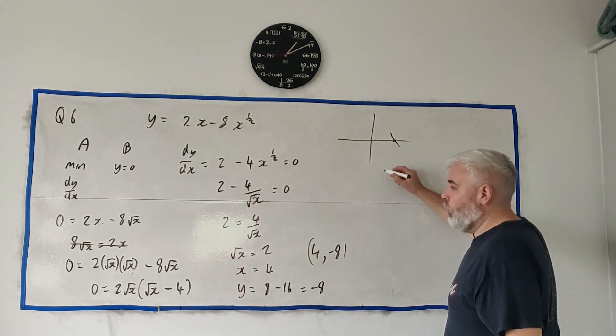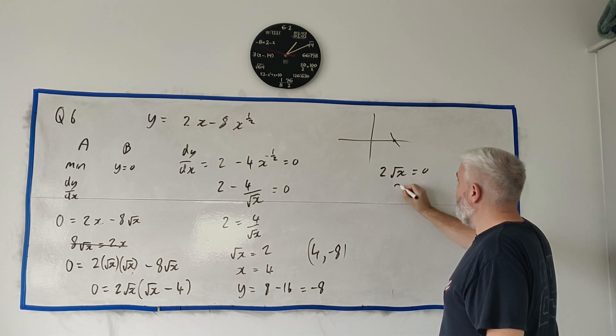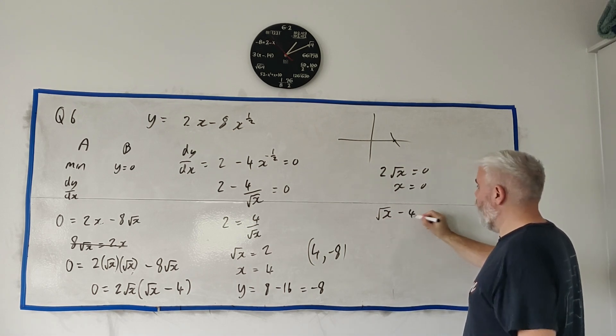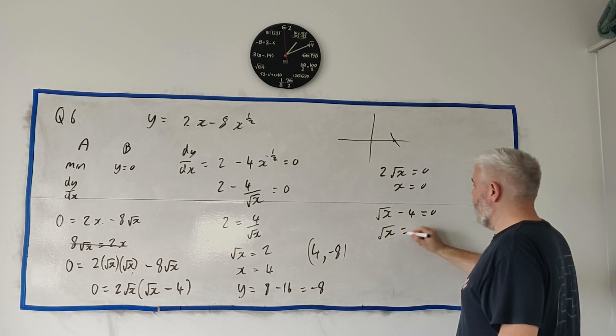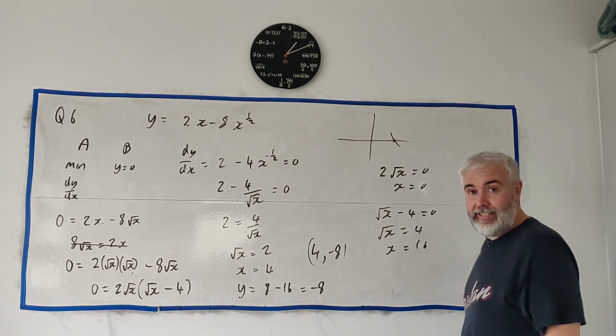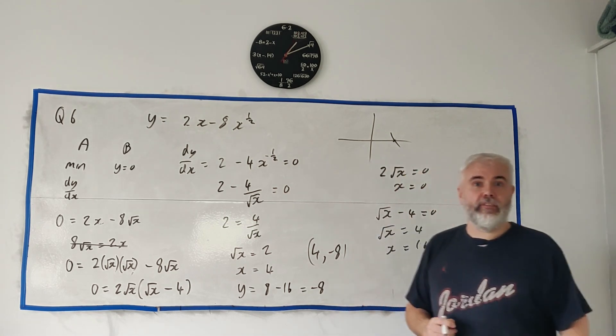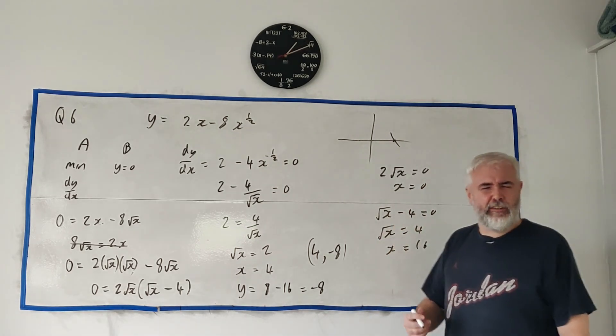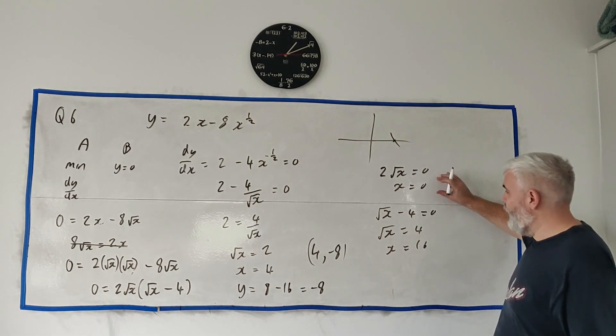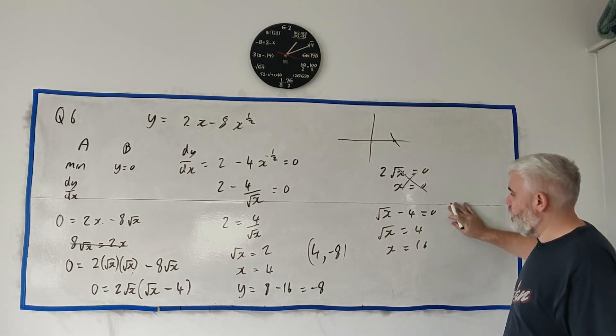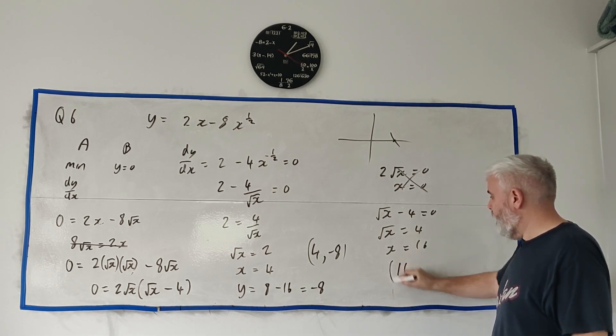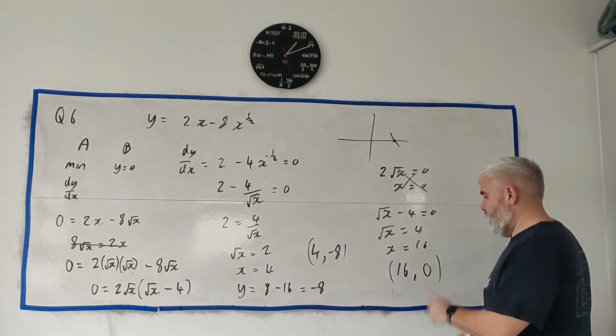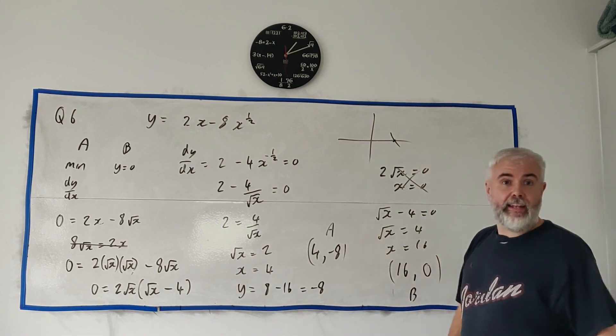So either this equals 0 or this equals 0. So 2 square root of x equals 0 implies x equals 0. And square root of x minus 4 equals 0 implies square root of x equals 4, x is equal 16. Now you have to be a little careful here. They said the positive x-axis. X equals 0 isn't actually positive. 0 is not positive. So you might lose a mark for keeping this in here. So we can discount this one. The answer is 16. And we know that y is 0. We started off with the idea of 0. So that's B. And this one here was A. And that's part A.